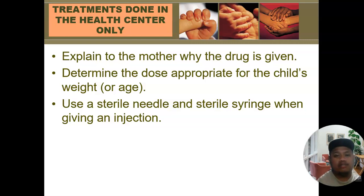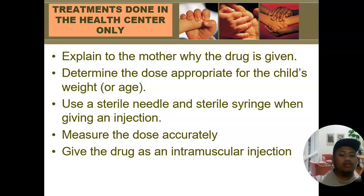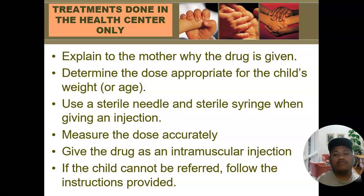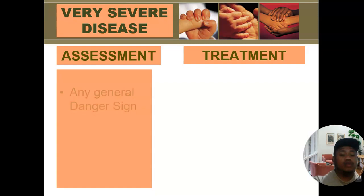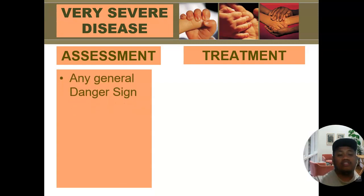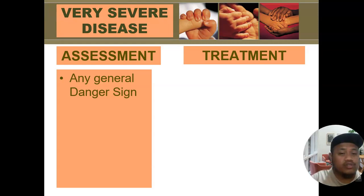Give the drug intramuscularly for antibiotics. If the child cannot be referred, follow the instructions provided in the IMCI protocol. Very severe disease is a condition with the presence of one or more danger signs — convulsion, unable to breastfeed, vomits everything, and abnormally sleepy. Note that even just one danger sign can classify the child as pink classification, except for patients under diarrheal conditions. If the child has only danger signs without main symptoms, categorize the condition as very severe disease.